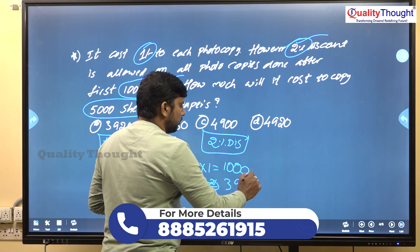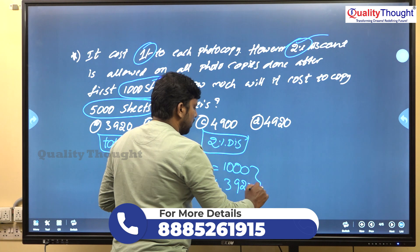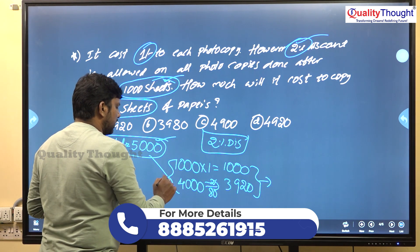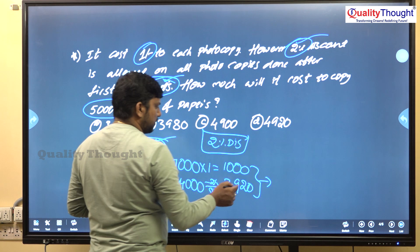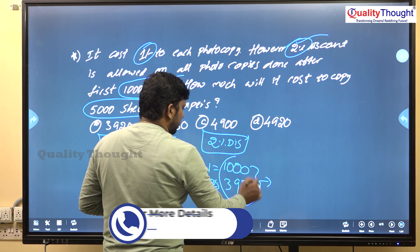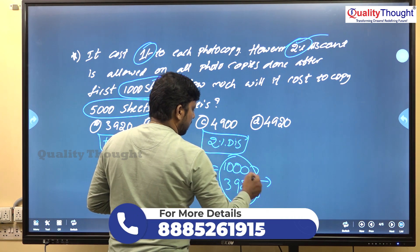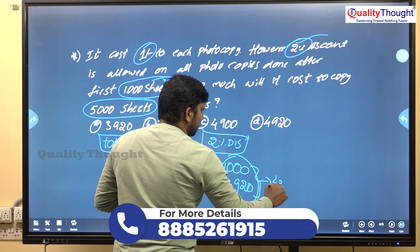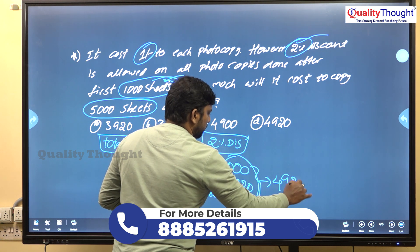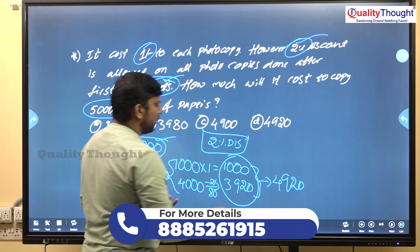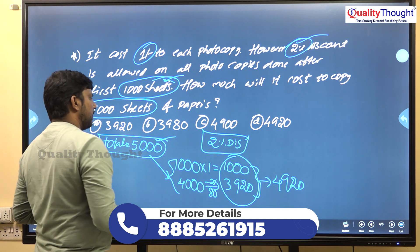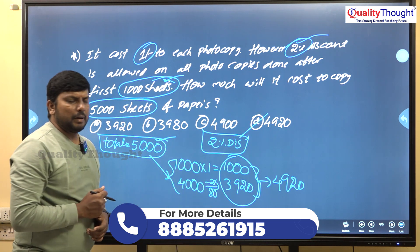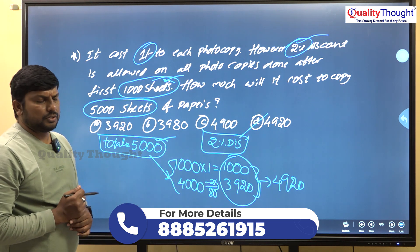The total price is 1000 plus 3,920 rupees, which equals 4,920 rupees. So the answer is option D.